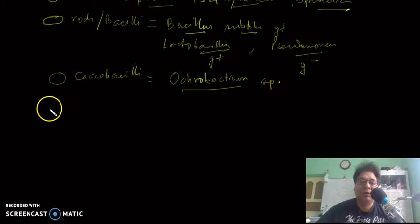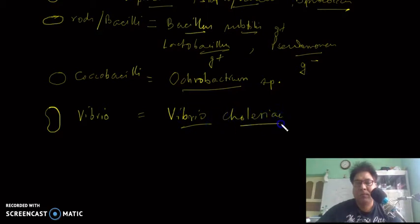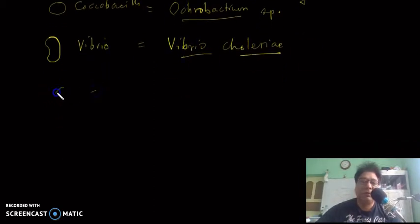There is another type of bacteria that are curved or comma-shaped, also literally known as Vibrio. The example is Vibrio cholerae. This is a Vibrio-shaped or comma-shaped bacterium.